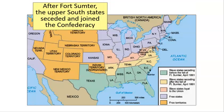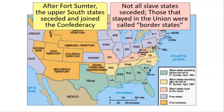After Fort Sumter, the upper South — Arkansas, Tennessee, North Carolina, and Virginia — all secede and join the Confederacy as well. But not all slave states leave. Missouri, Kentucky, Delaware, Maryland, and about a third of Virginia stay in the Union. They become known as the border states, and they're going to be pretty important to the outcome of the war. At this point, the war is pretty much on.